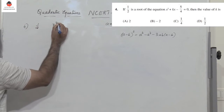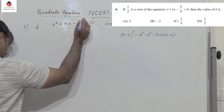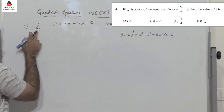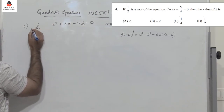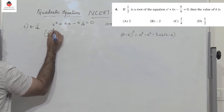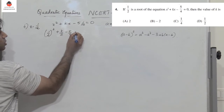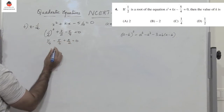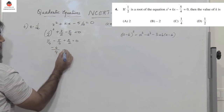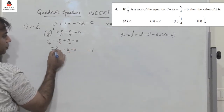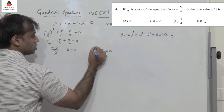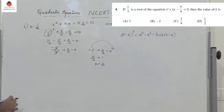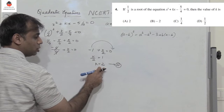Question 4: 1 by 2 is the root of x squared plus kx minus 5 by 4 equals 0. Find the value of k. Since 1 by 2 is a root, putting x equals 1 by 2 gives: 1 by 4 plus k by 2 minus 5 by 4 equals 0. This simplifies to minus 4 by 4 plus k by 2 equals 0, so minus 1 plus k by 2 equals 0, giving k by 2 equals 1, so k equals 2. That is option A.